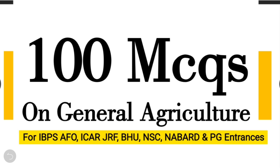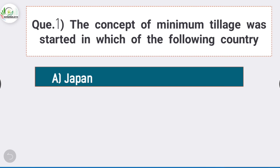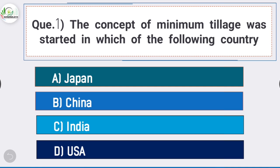Hello friends, welcome to our YouTube channel. In this video we will see top 100 MCQs on general agriculture. It will be helpful for your exam preparation such as ICAR JRF, NABARD, IBPS AFO, NSE, etc. So without wasting your time, let's start the video. Question number one: the concept of minimum tillage was started in which of the following country?